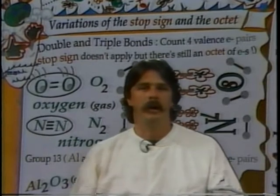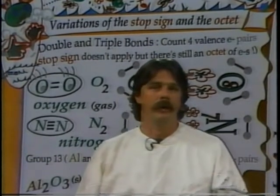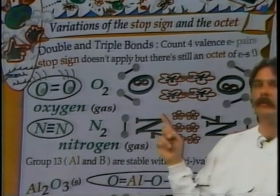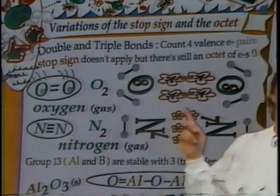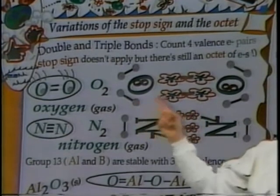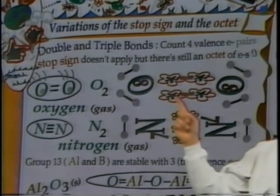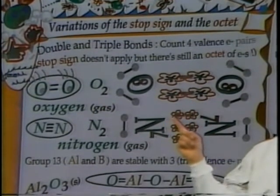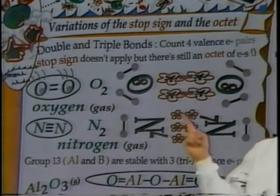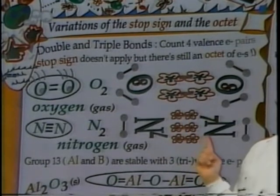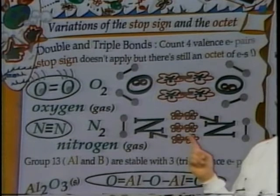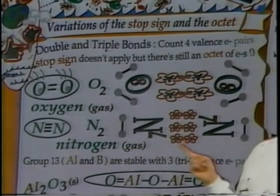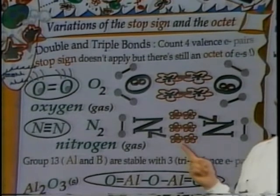Still considering covalent bonding, some variations of the octet show that atoms will have eight electrons around them, but the covalent bonds vary. For oxygen — needing two more electrons for eight — it will form a double bond, which is why oxygen is known as O2. For nitrogen, with three vacancies, two nitrogens get together to form a triple bond — one, two, three covalent bonds between them. This is one of the strongest bonds in nature: the triple bond of nitrogen.